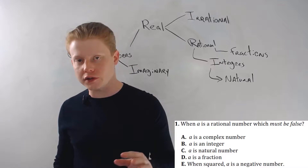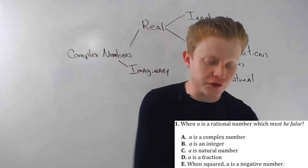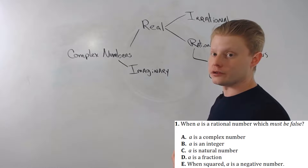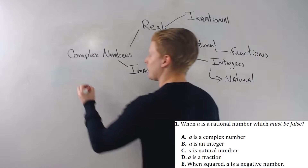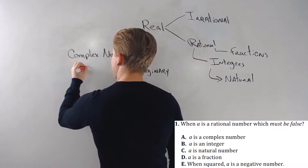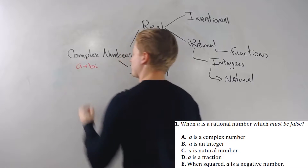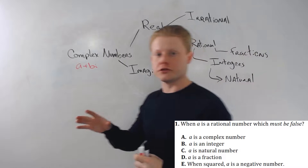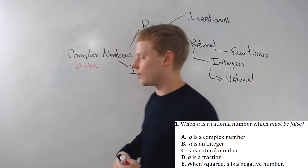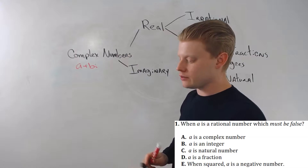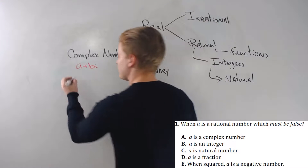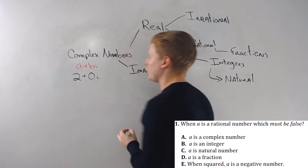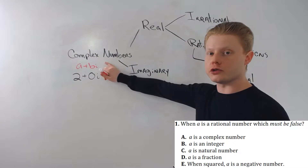First things first — this is the first trick you've got to know: all numbers are complex numbers. You can write any number as a complex number in the form a plus bi, where i is the square root of negative one. Check out the complex numbers video for more on that. Even the lowly number two — I could write that as 2 plus 0 times i. All numbers are complex numbers. That's trick number one.